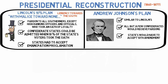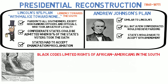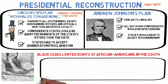States adopted laws called Black Codes, in which they resurrected the old slave codes and simply replaced the word 'slave' with 'black.' Under the Black Codes, African-Americans could not testify in court, had to enter into labor contracts or be put into jail, and could not vote or hold office. The Black Codes were designed to keep African-Americans in a condition very similar to slavery.